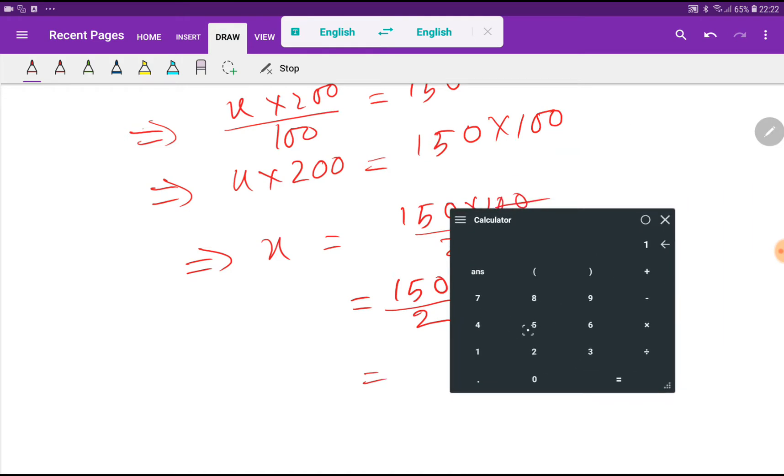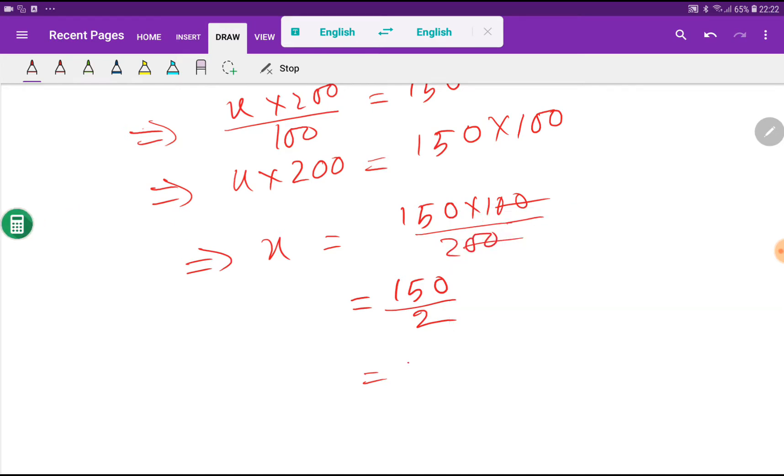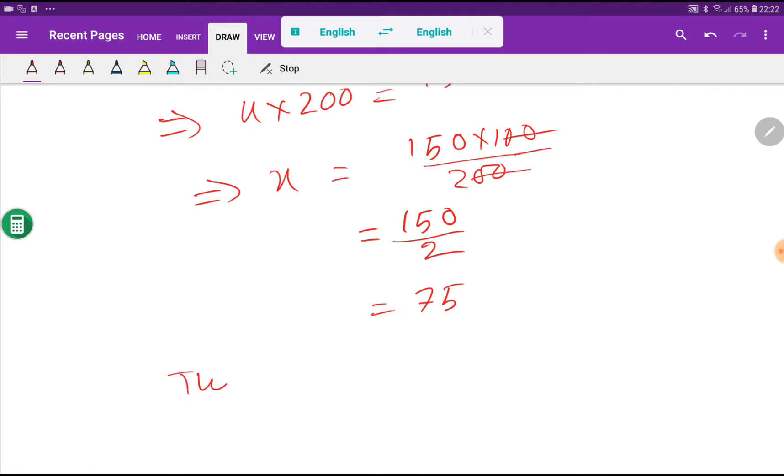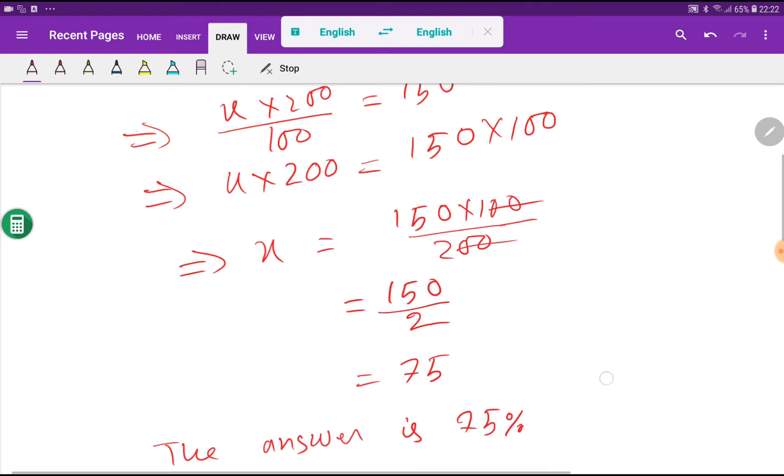Let me use my calculator. 150 divided by 2, that gives me 75. So the answer is 75 percent.